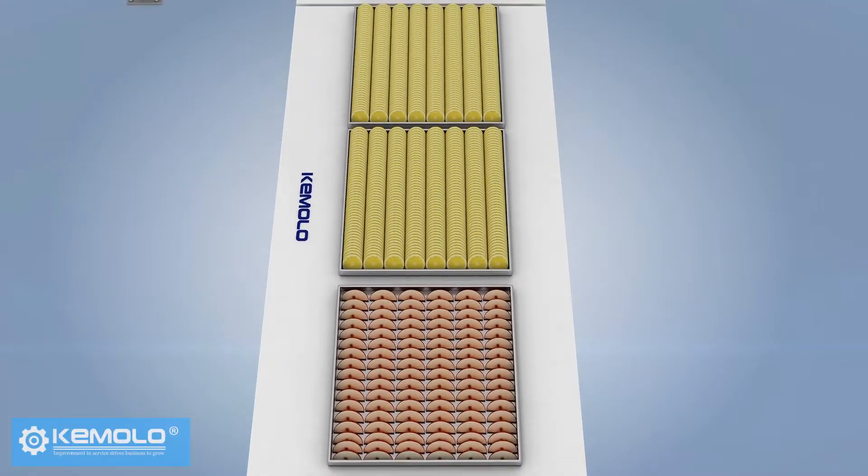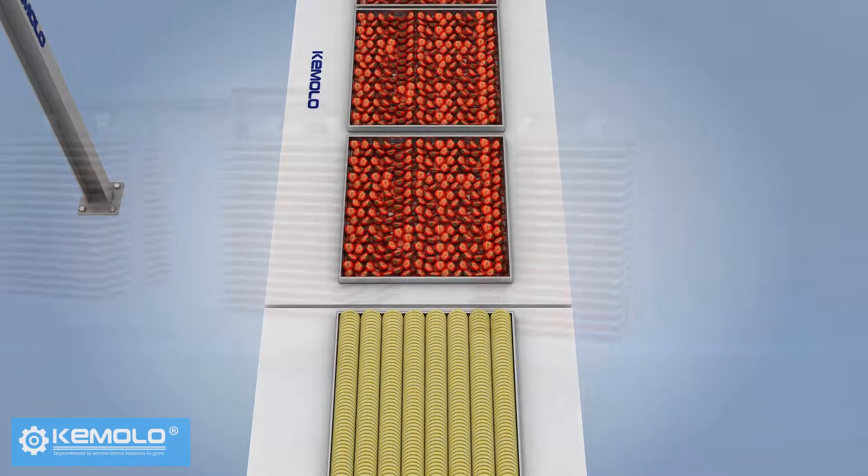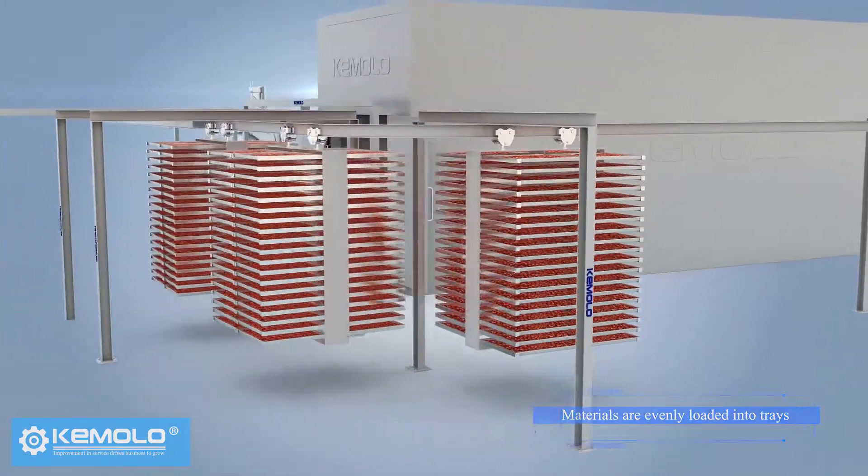First, wash and slice the fruits, vegetables, or other pre-processed materials evenly and load them into product trays.